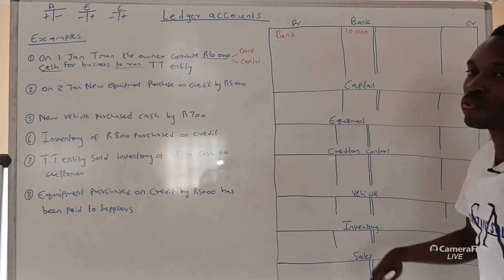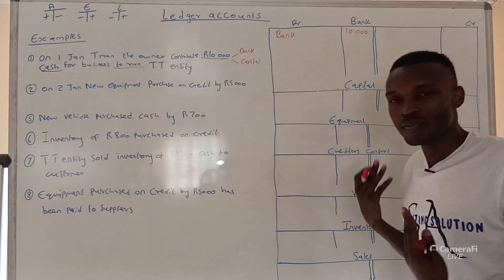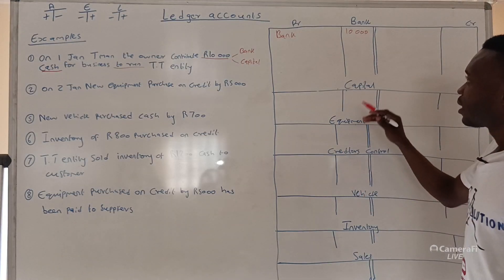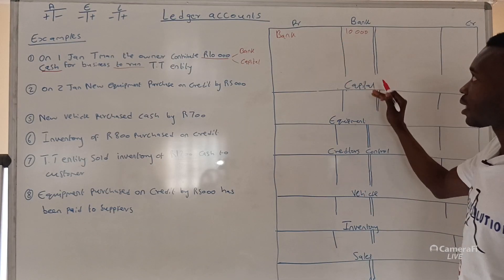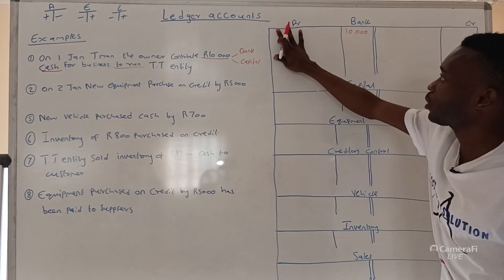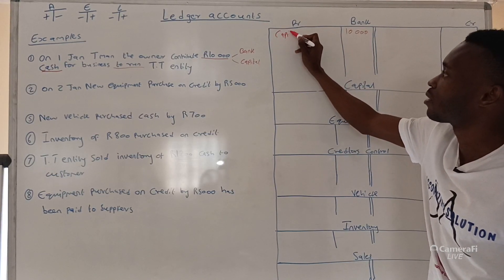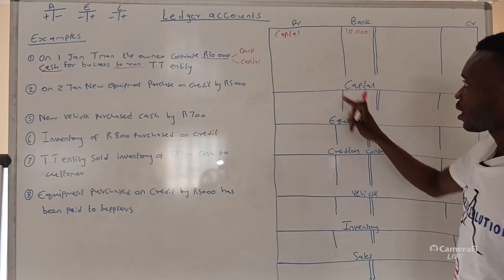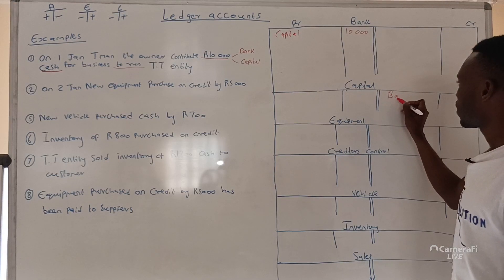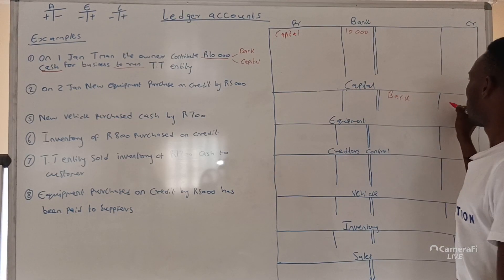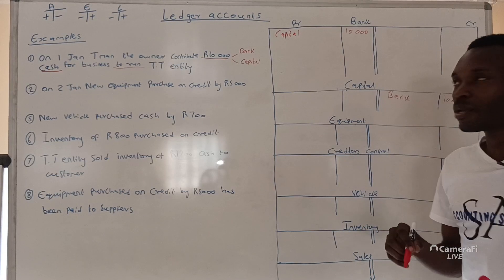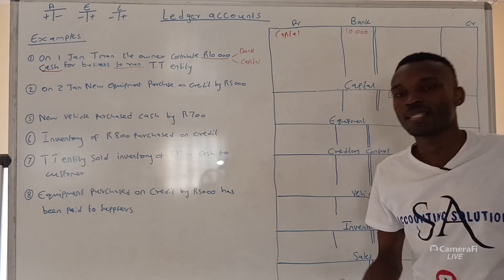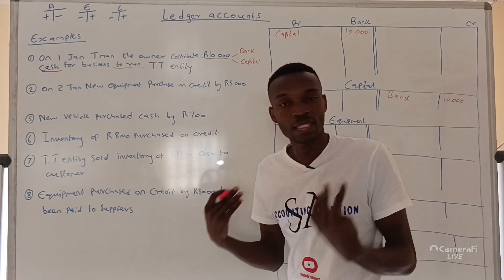Under capital — the principle of accounting says if we debit one, the second one will be credited. They swap names: under bank we write 'capital', and under capital we write 'bank', with the amount of R10,000. You have to swap the name — you cannot write 'bank' under bank and 'capital' under capital because that would not make sense.